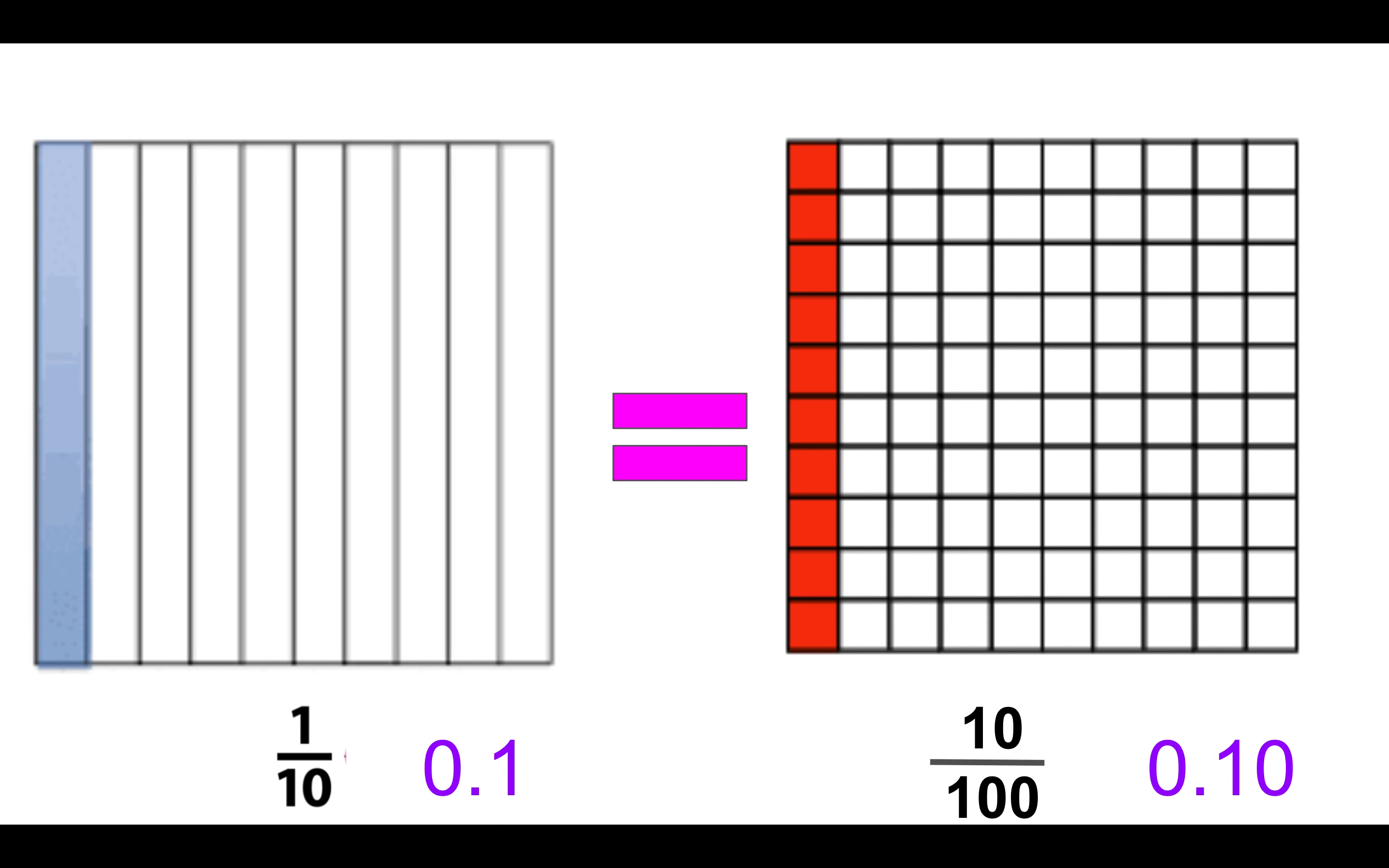And that one in the tenths place gives me a clue that it's equal to one tenth. So when we use fractions and decimals, we can understand that, for example, one tenth is the same as ten hundredths. It's easier to see that with decimals because I can just look and see that the one is in the tenths place.